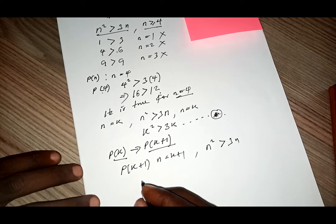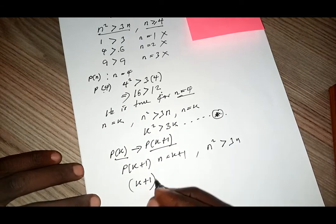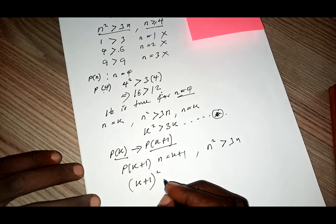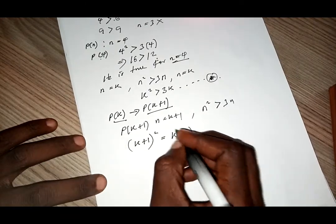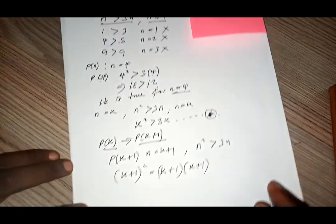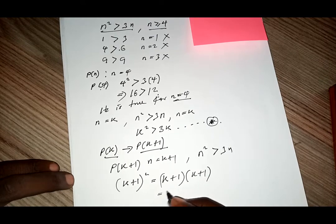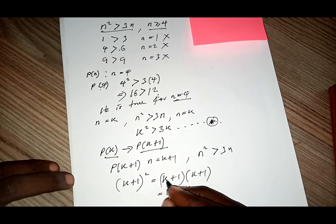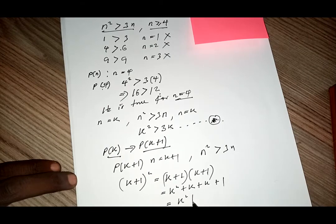When n is equal to k+1, then n squared becomes (k+1) squared. This is equal to (k+1)(k+1), which expands to k squared plus k plus k plus 1, giving us k squared plus 2k plus 1.